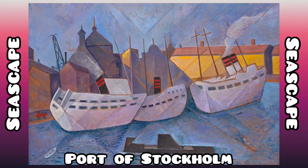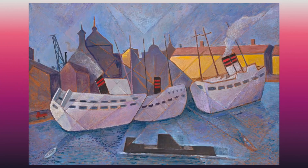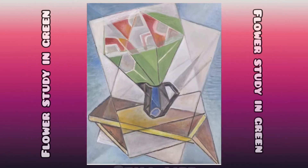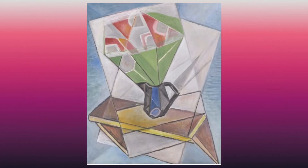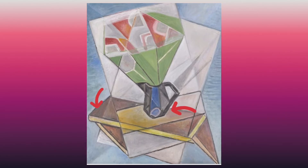Port of Stockholm — notice all the straight lines and the geometric shapes. I also see a lot of primary colors. Here's a cubist still life called Flower Study in Green. The flowers are drawn with geometric shapes, as well as the table and the vase.